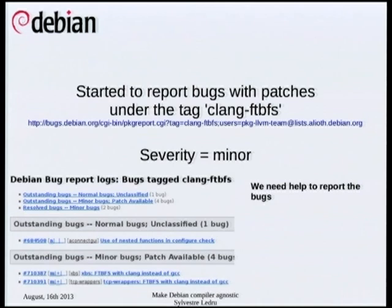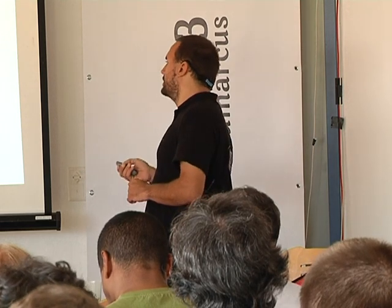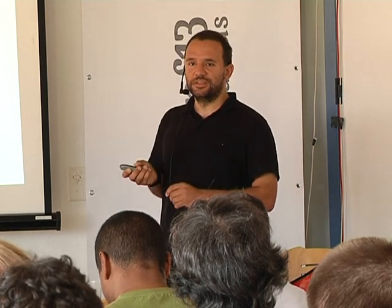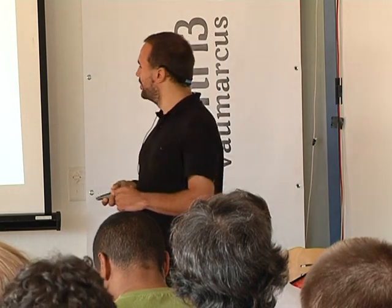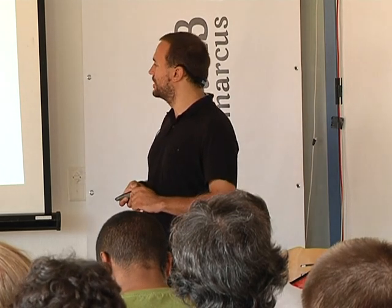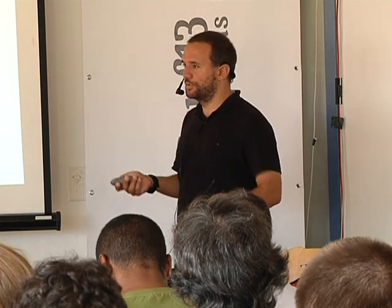We started to report bugs using the tag 'clang-FTBFS'. We only reported 10 so far because we tried to provide patches, but it takes time and we need to test everything. Some patches have already been applied, but as I mentioned, we have 1,200 bugs regarding packages, so it is going to take a lot of time. I'm not pushing this for Jessie, and we need help to report those bugs.